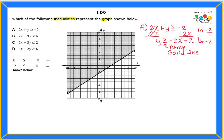Now I can decide whether letter A is a good answer. Looking at the slope: my slope from letter A is negative. But looking at the graph, since my line is pointing to the right, I'm looking for a positive slope. My slope from A is negative, so letter A cannot be my answer.